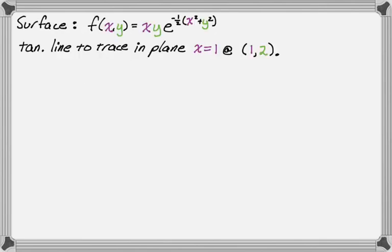We have a surface, f(x,y) or z, equals x times y times e to the negative one-half quantity x squared plus y squared. So that's the surface we're going to deal with, and we want to find the tangent line to the trace in the plane x equals one at the point (1,2).